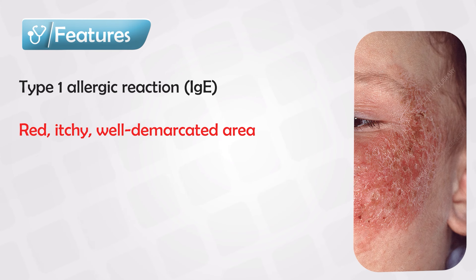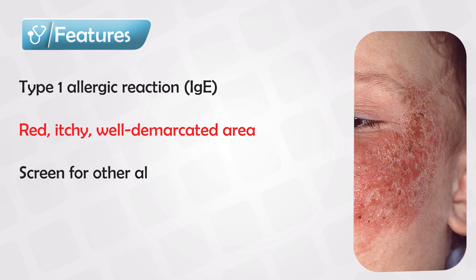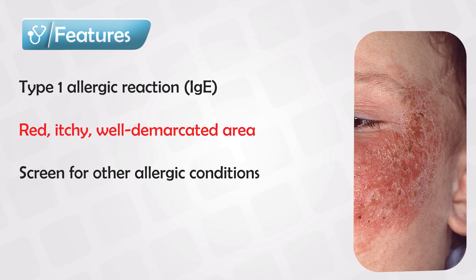Upon contact with an allergen, the skin will be very red, very itchy, and well-demarcated. There can be some systemic symptoms as well, such as runny nose and high fever, although this requires direct contact with a lot of allergen. Itchiness is highly specific and is a hallmark — more specifically, pruritic eruption is the most common hallmark in atopic dermatitis.